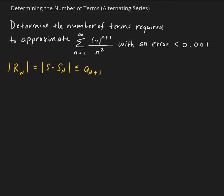What we can do here is find the (n+1)th term, use that, and then bound that by the error. From there, we're going to solve for the inequality. The (n+1)th term for this series is going to be 1 over (n+1) squared, since the nth term is 1 over n squared.